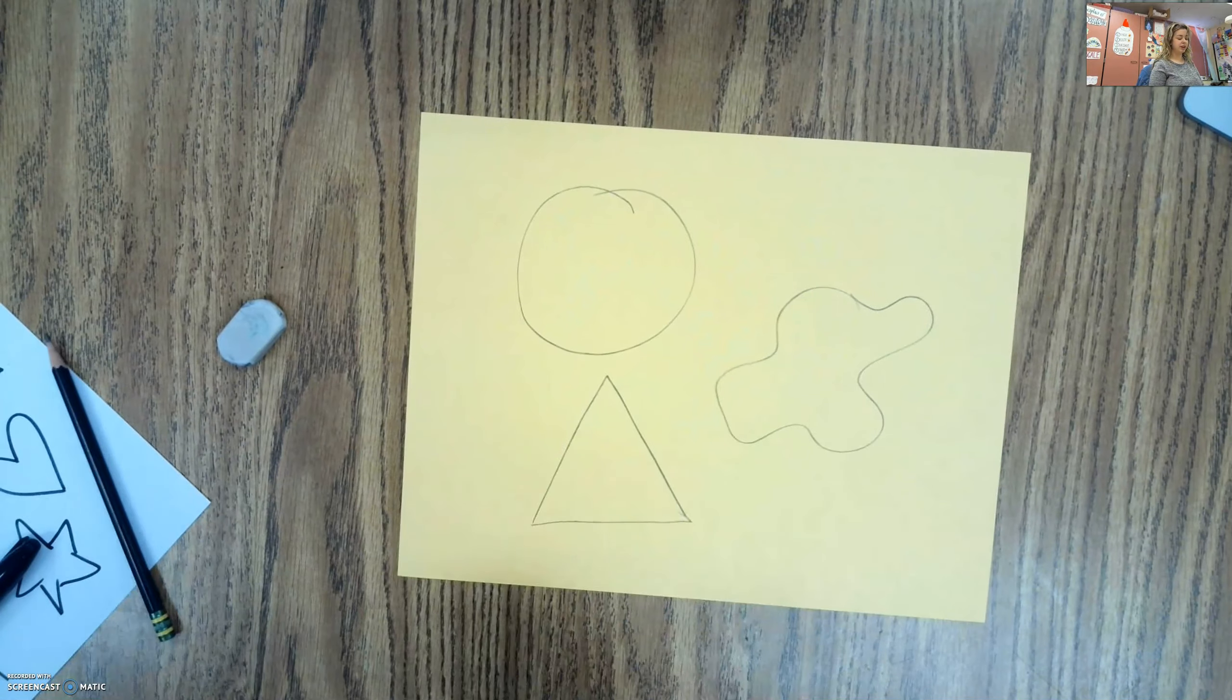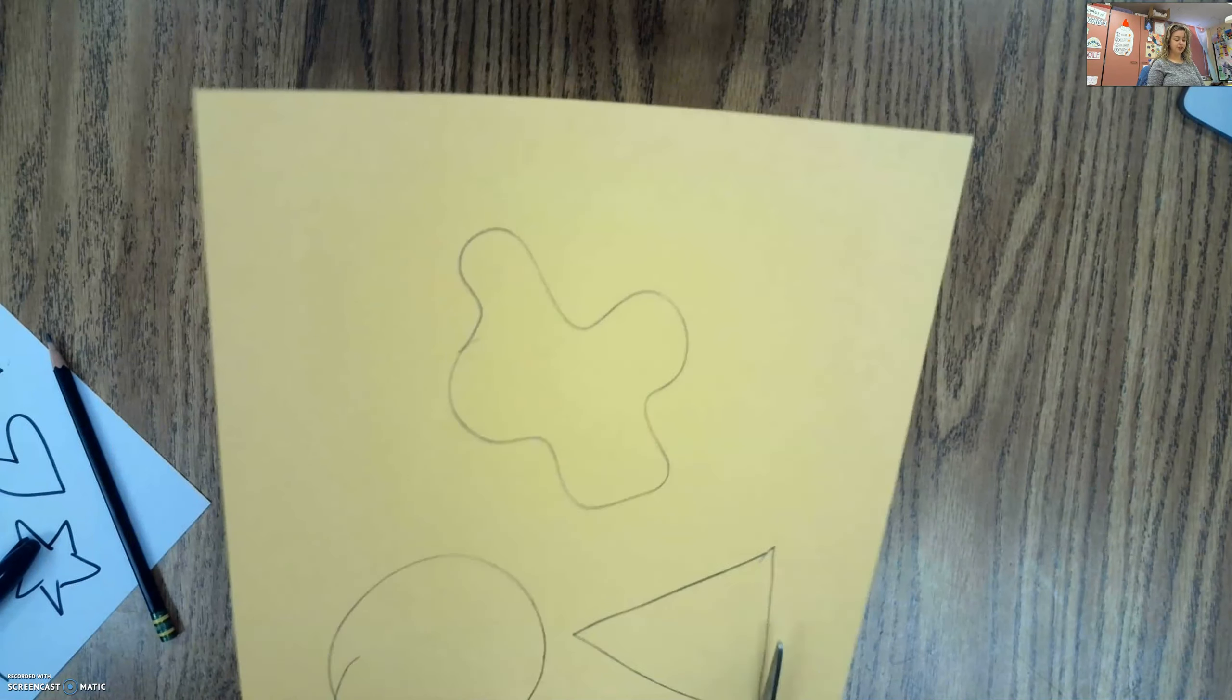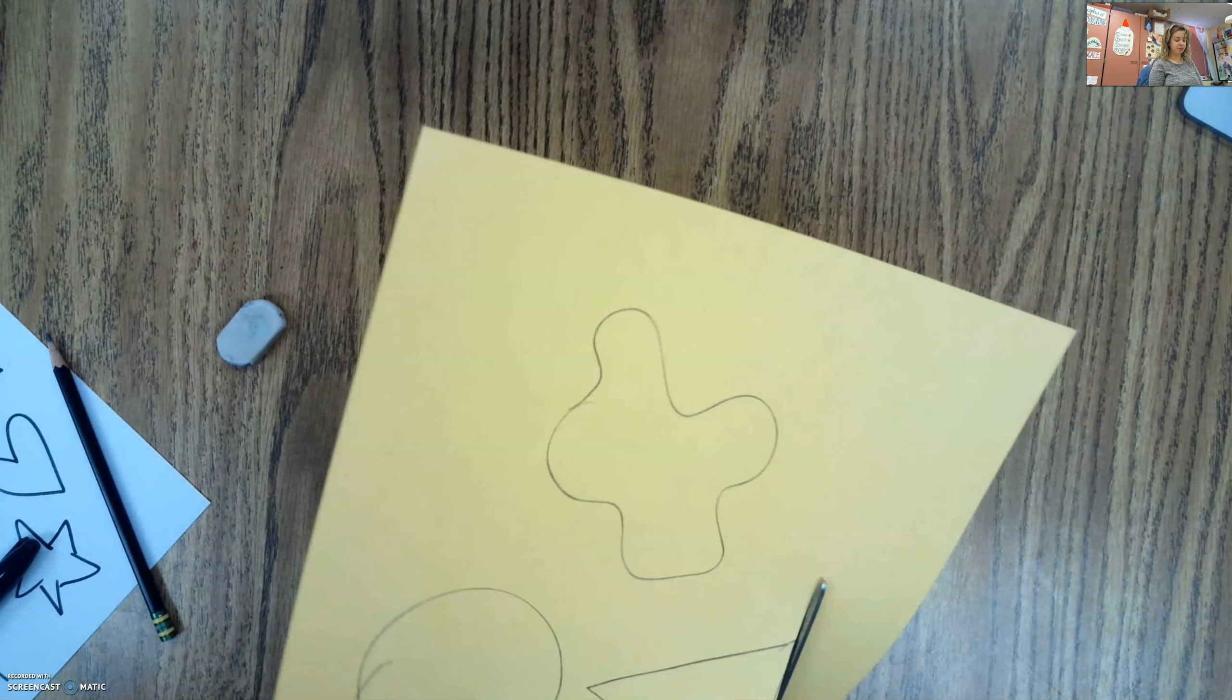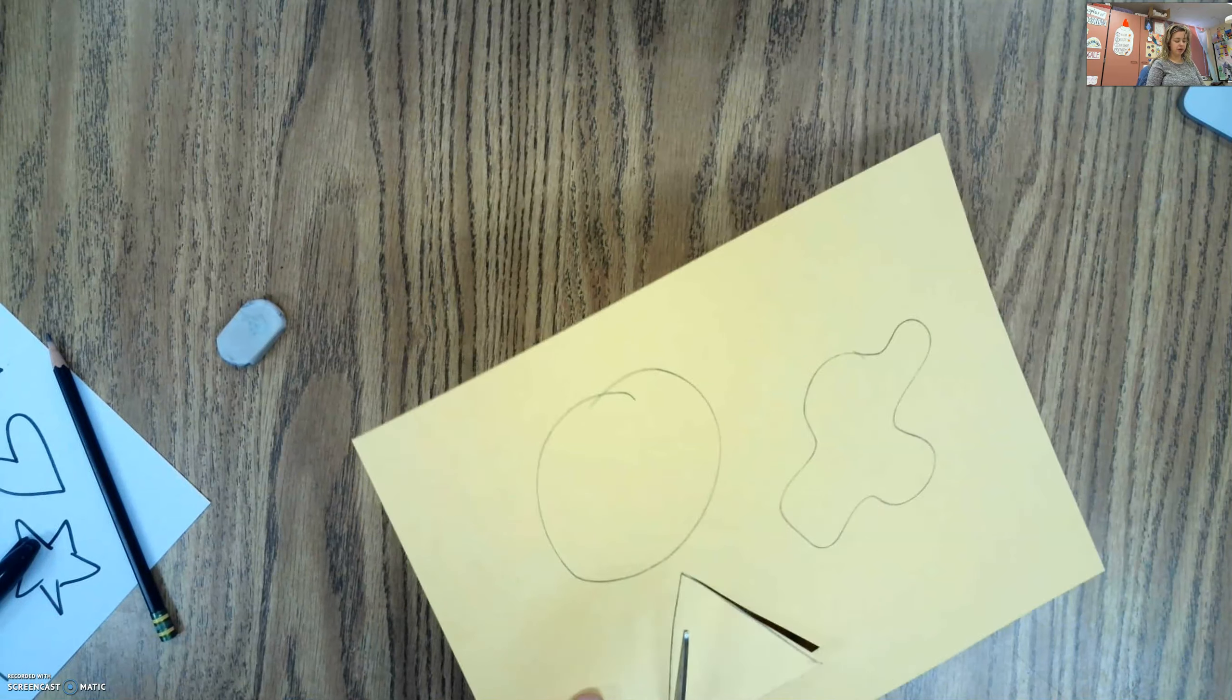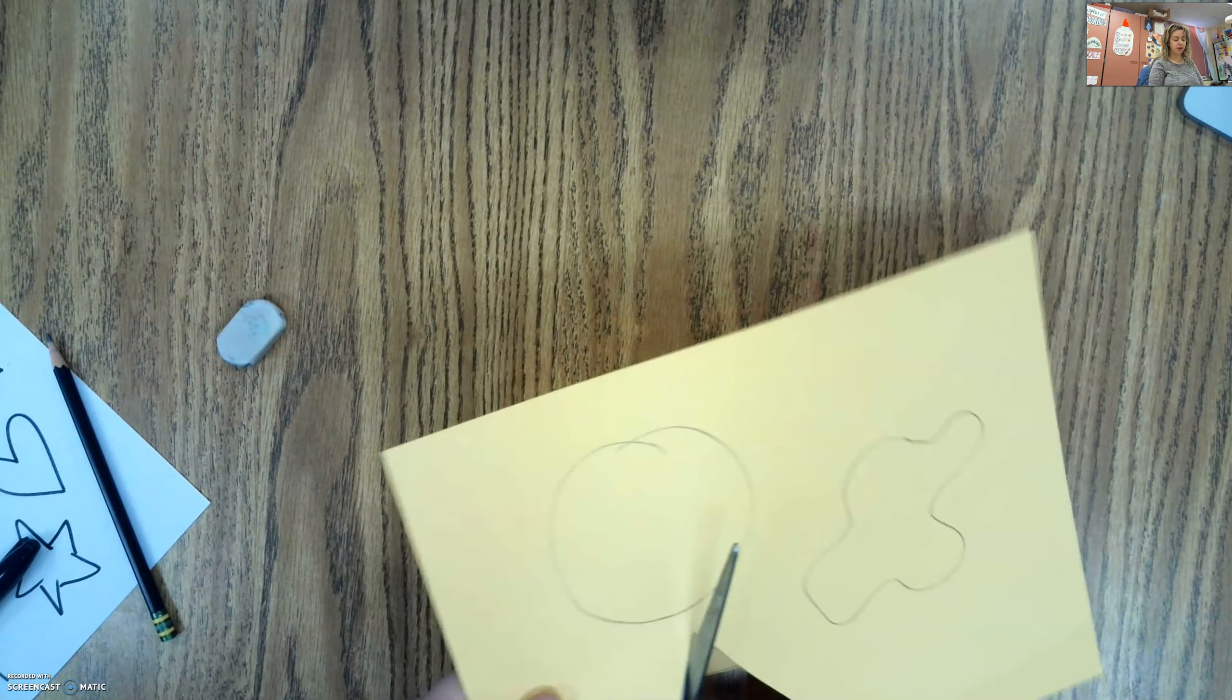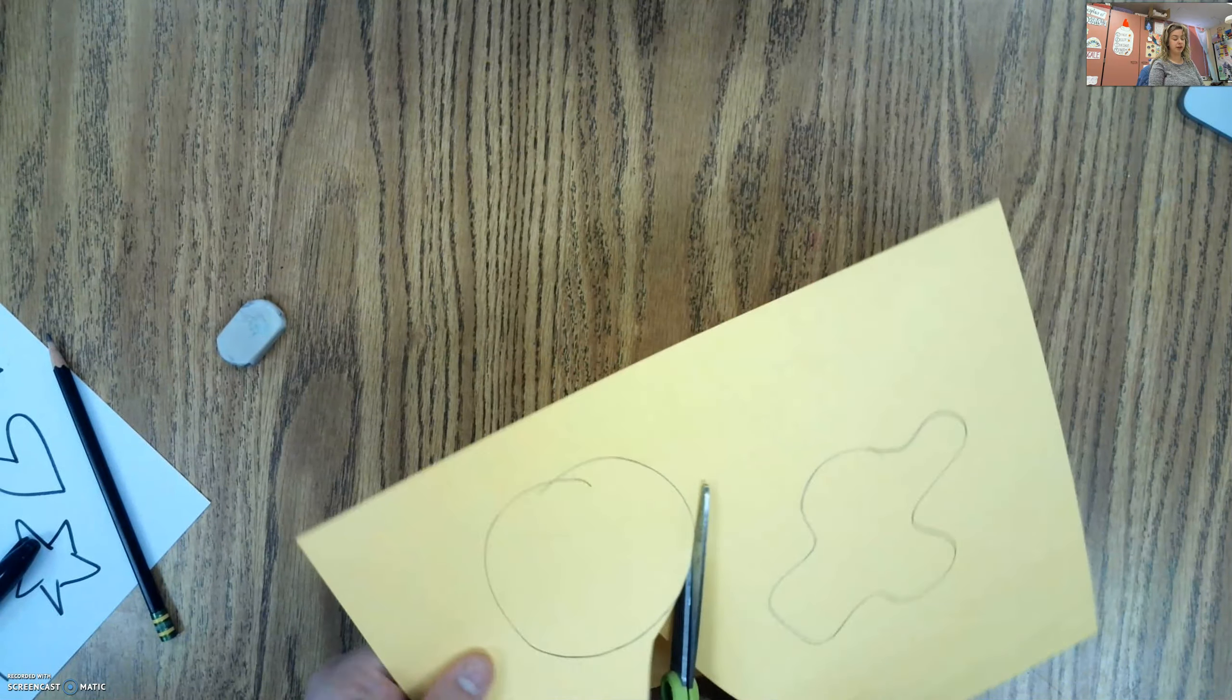Now I'm going to cut these out. And I'm using colored paper because colored paper is a little bit thicker. And we're going to be tracing around these. So I'm going to work on getting these three shapes cut out. And then we will move on to our next step.